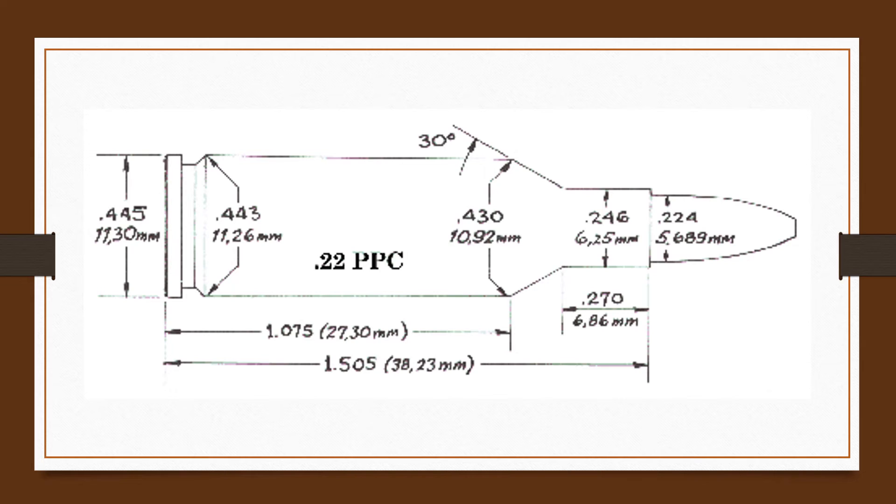The originators altered the 220 Russian case by giving it a 10 degree body taper, a 30 degree shoulder angle, as well as expanding the neck to accept the standard .224 diameter bullet used in the U.S.